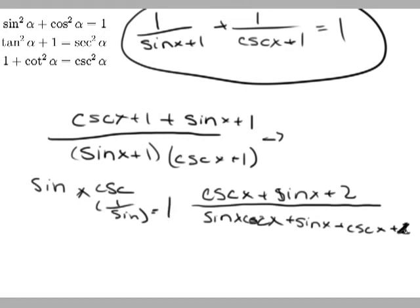and this is supposed to be 1 as well, silly me. Okay, so that would equal 1, making it cosecant x plus sine x plus 2,